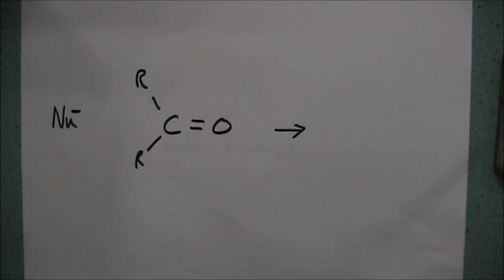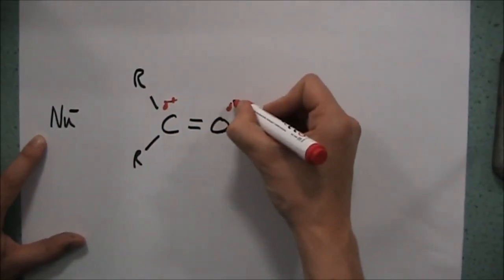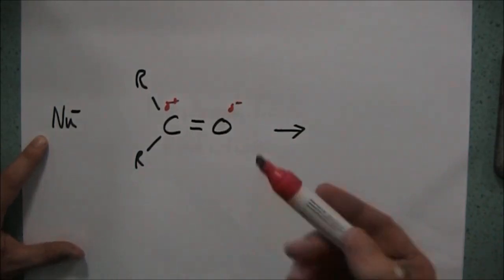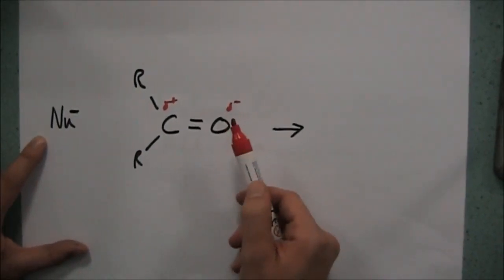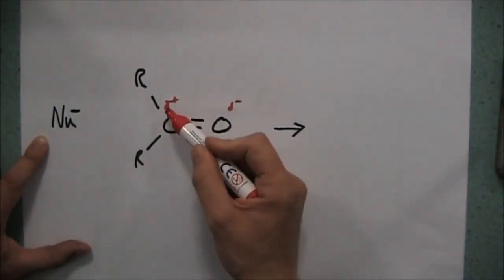So here's my carbonyl compound. I have the C double bond O, and we have a delta plus at this end and a delta minus at this end. That's because the electronegativity of the oxygen draws the electron density in this pi bond across towards the oxygen, leaving a delta plus here.